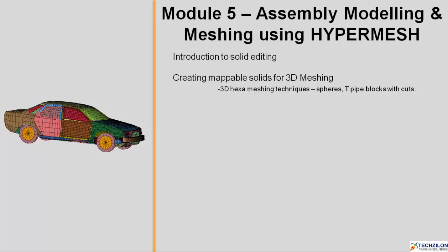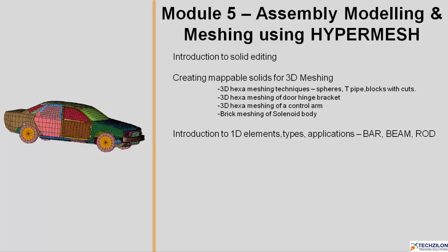You will also cover 3D hexa meshing of a door hinge bracket, 3D hexa meshing of a control arm, and brick meshing of a solenoid body. You will then be introduced to 1D elements — their types, applications, including bar, beam, and rod elements.